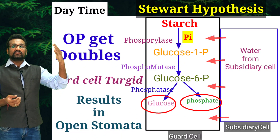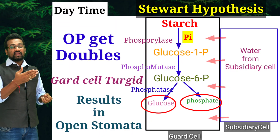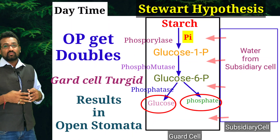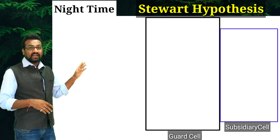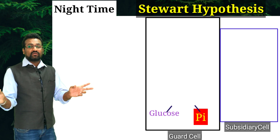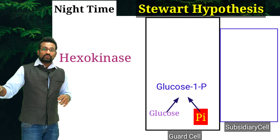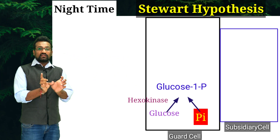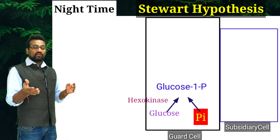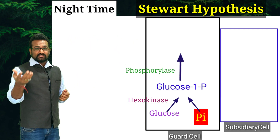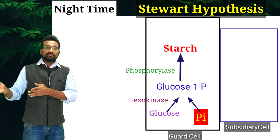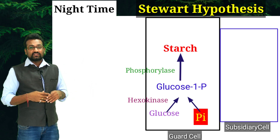During daytime, carbon dioxide present in the atmosphere is utilized for starch preparation, so less CO2 dissolves into the cell solution and the pH automatically increases — beyond 7, around 7.4 or 7.9. During night time, it is just the opposite: separate glucose and inorganic phosphate are joined together by hexokinase, which adds the phosphate group onto glucose. Glucose-1-phosphate is then reformed and collected together by phosphorylase to produce starch again. So during daytime starch converts to separate glucose and phosphate; during night, they convert back to starch — a reversible process.